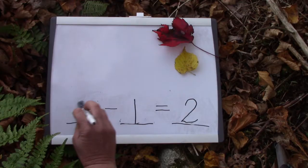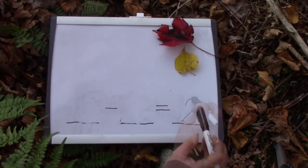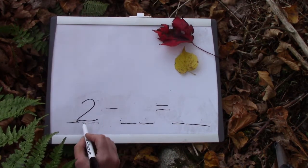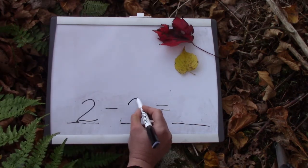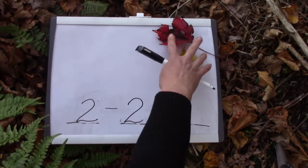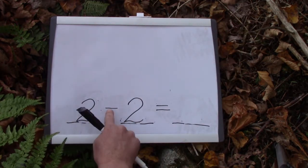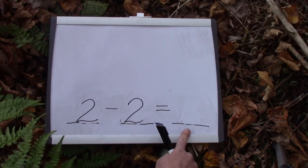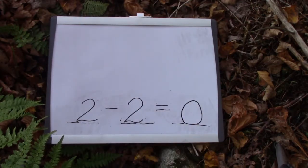Well, we don't have many leaves left. We're starting off with two leaves, and we're going to take away two. Two leaves blow away. Two take away two equals how many? Zero. There aren't any leaves.